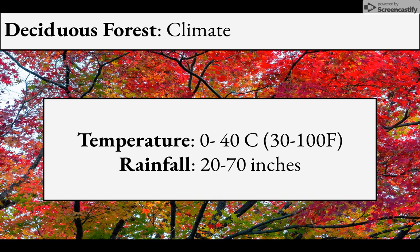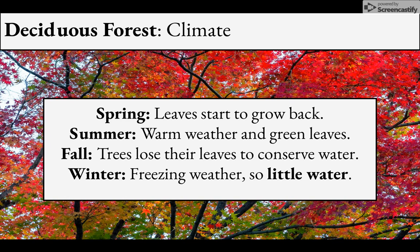Looking at the seasons: during the summer there's warm weather and very green leaves — everything has leaves on it. But during the fall, the trees will lose their leaves. The leaves start turning colors when the chlorophyll starts to break down, and then they fall to the ground.